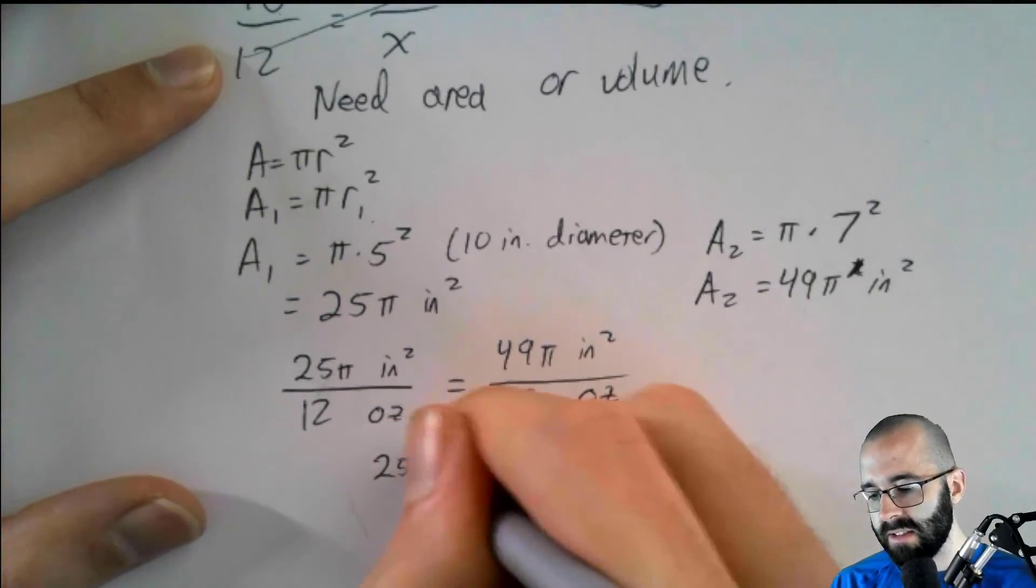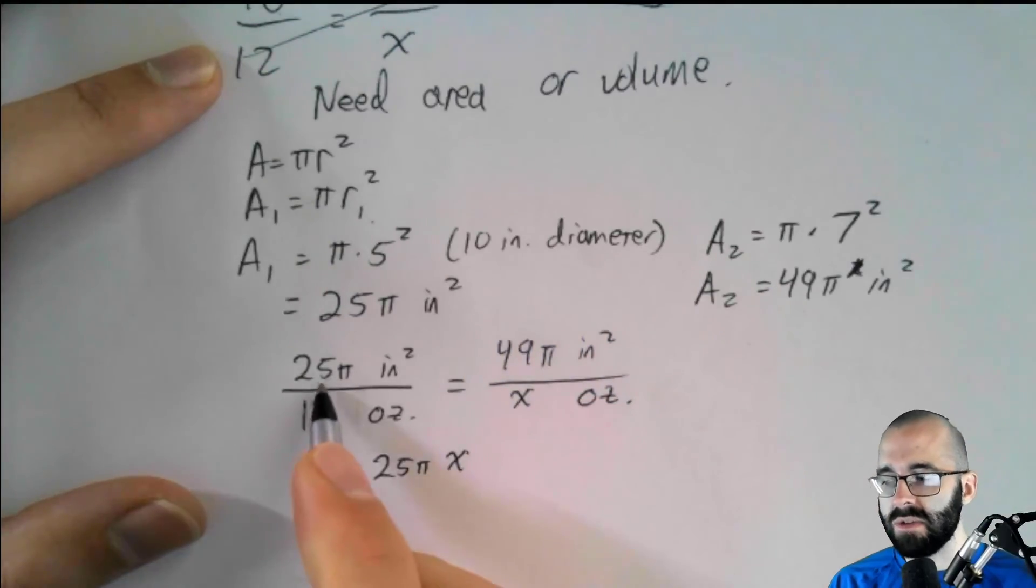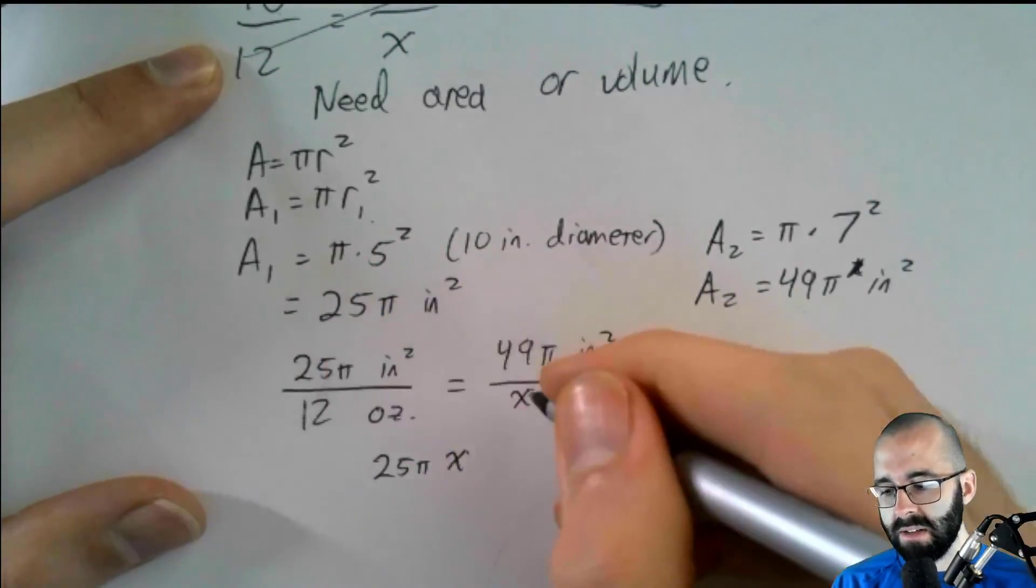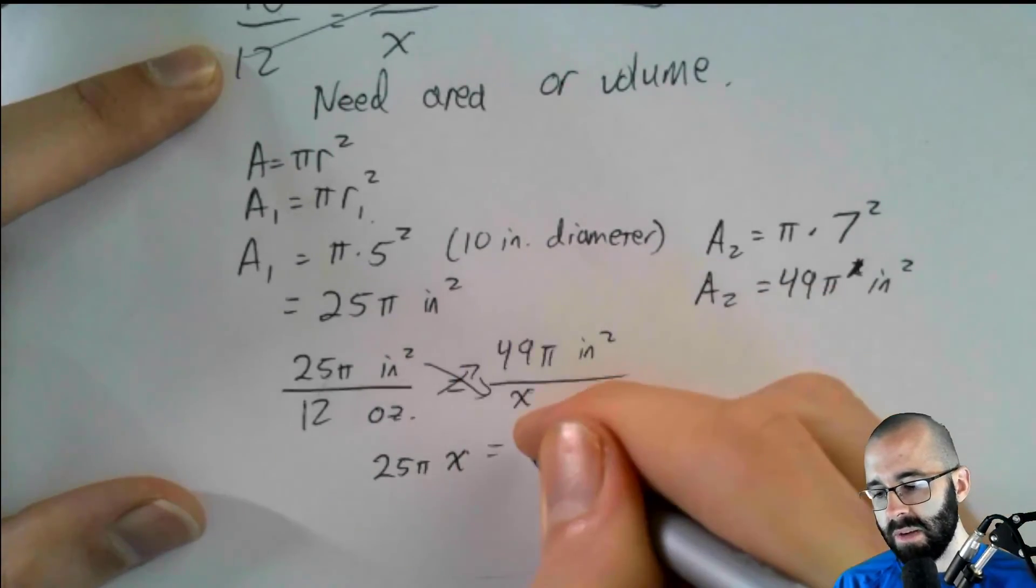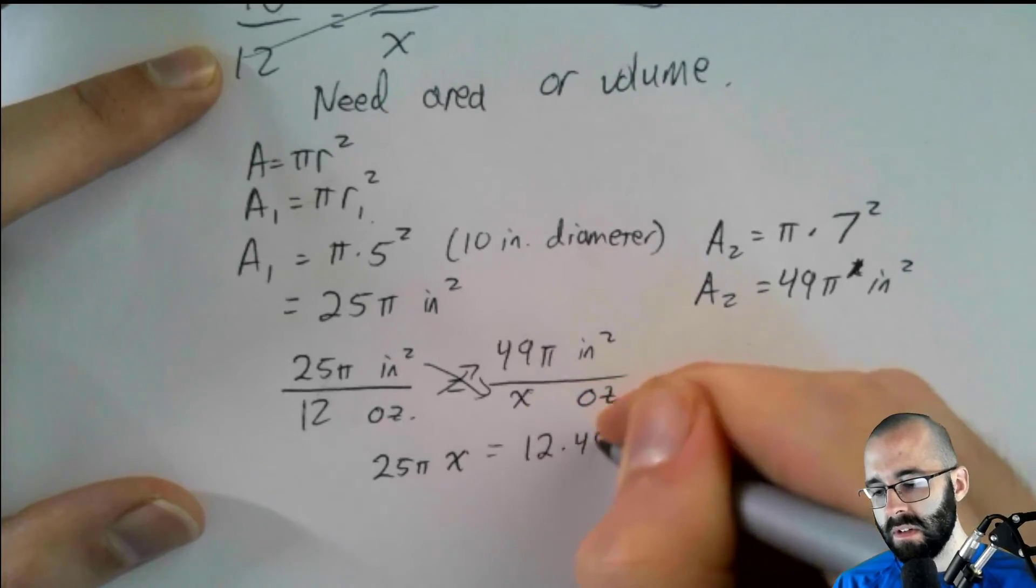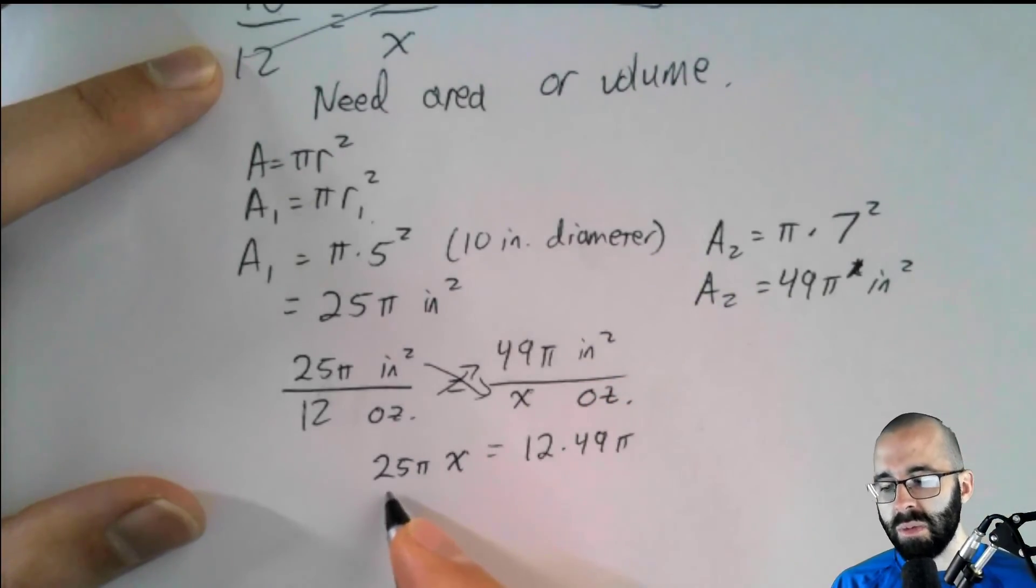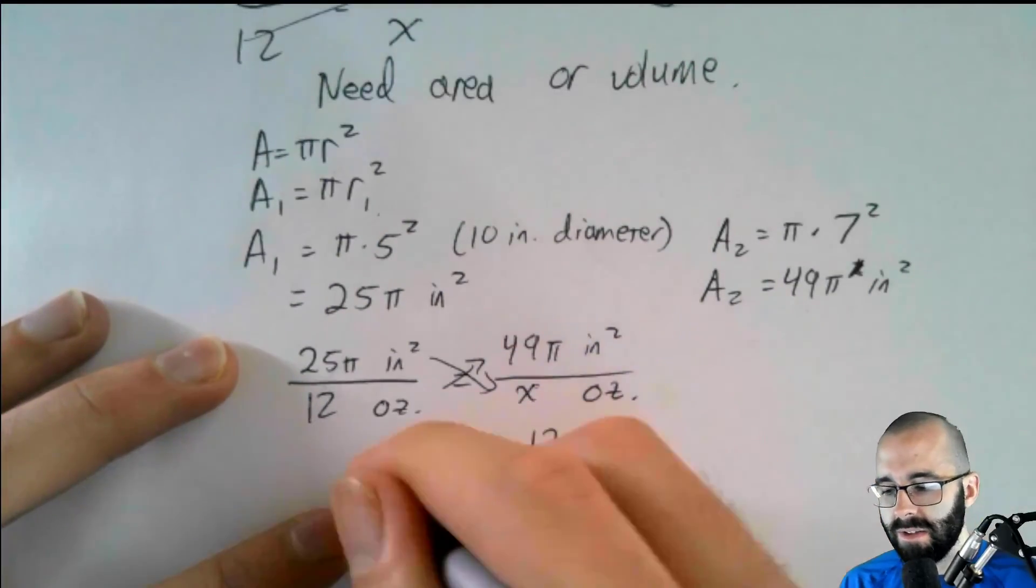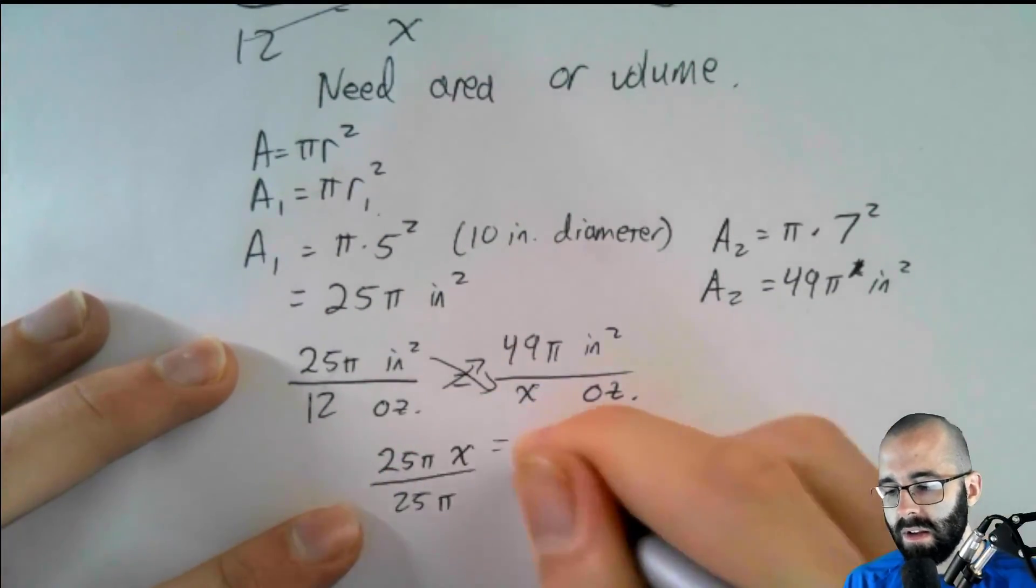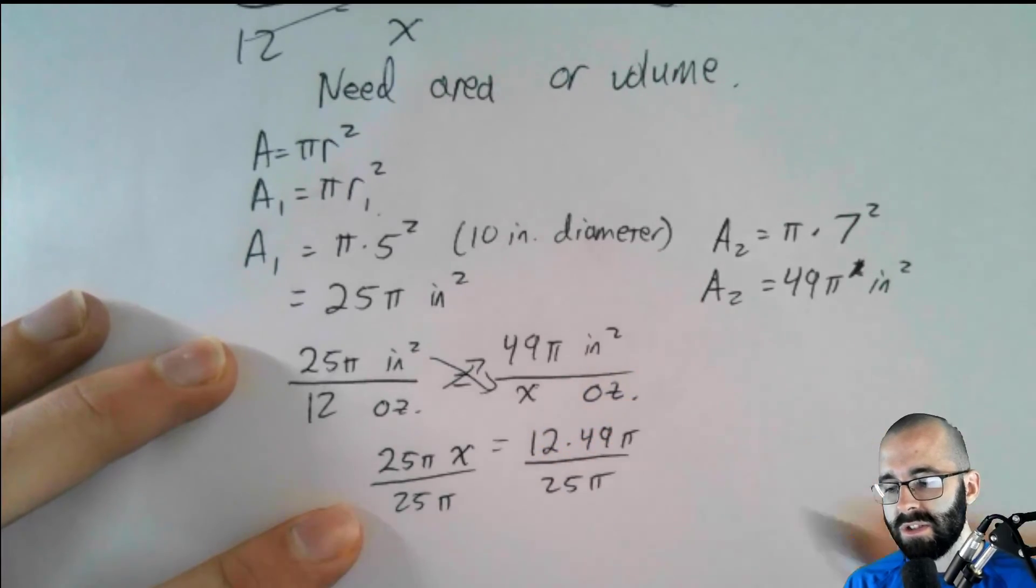And we're going to get 25 pi x. And again, you could have also used approximations here. 25 pi times x is equal to 12 times 49 pi. And now when we divide both sides by 25 pi, the pi's are going to cancel out. Which is why I decided to use an exact answer, but you didn't need to. And we throw, mathematicians, we throw around the words like exact answers very frequently.